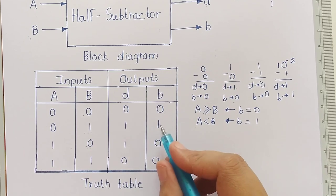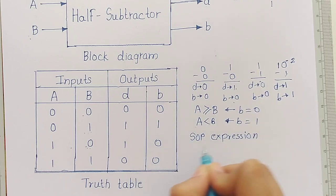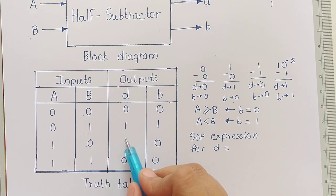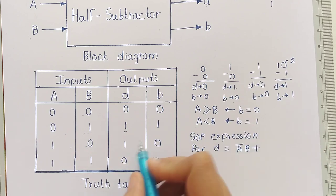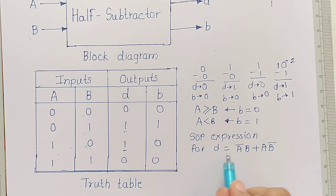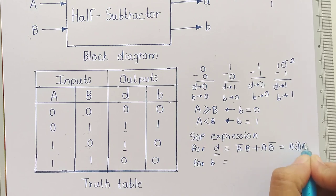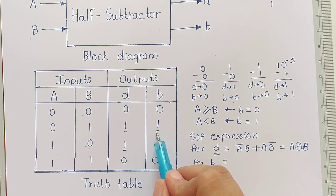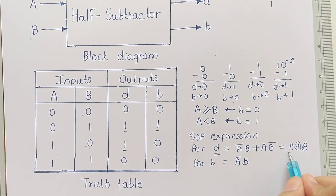Now we derive the SOP expressions for outputs D and B. For the D bit, we write the minterm for input combinations where D is 1: input 01 gives A̅B, and input 10 gives AB̅. So the SOP expression for D is A̅B + AB̅, which is nothing but A XOR B. For the B bit, the output is 1 only when A=0 and B=1, giving the expression A̅B. Note that the difference output of the half subtractor, A XOR B, is the same as the sum output of the half adder.